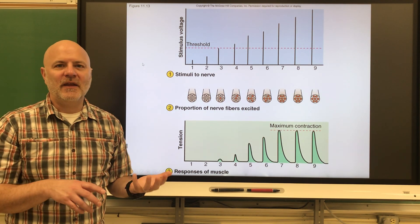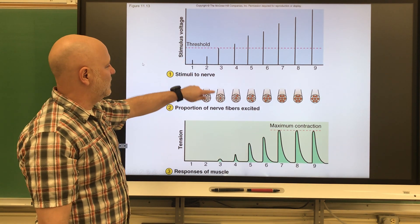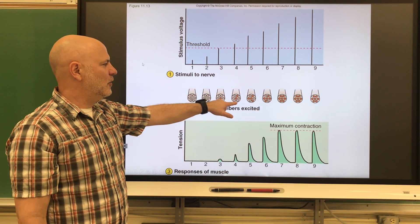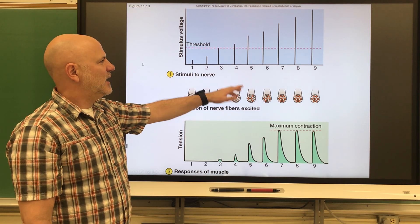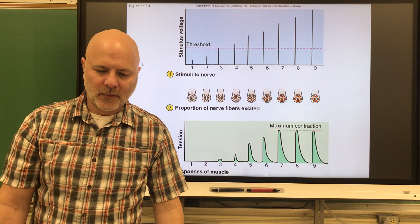The entire muscle does not obey all-or-none. If we have a low stimulus, we're just going to have a few muscle cells contracting. It takes a much stronger stimulus to get the entire muscle to contract.